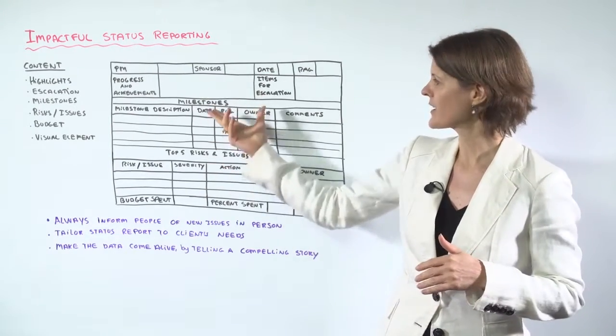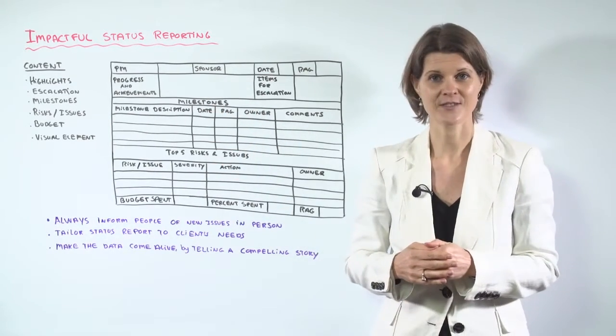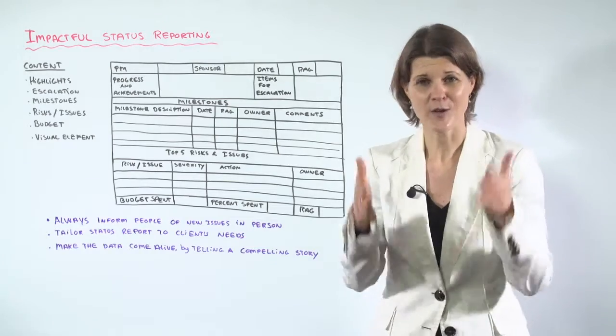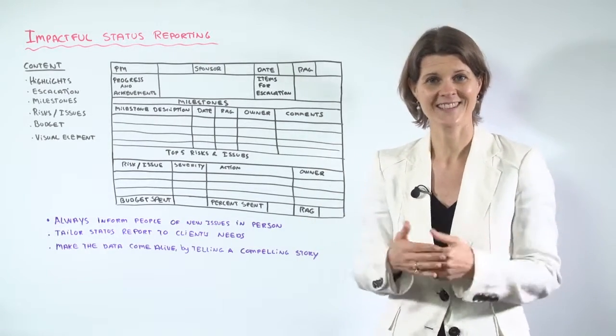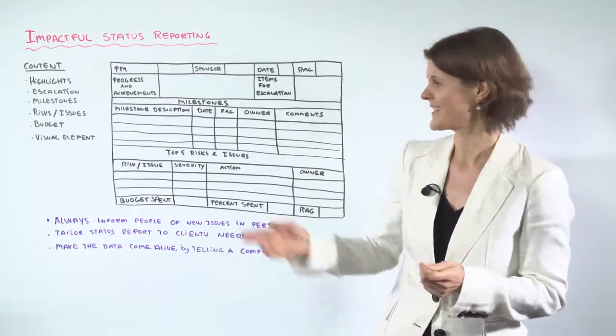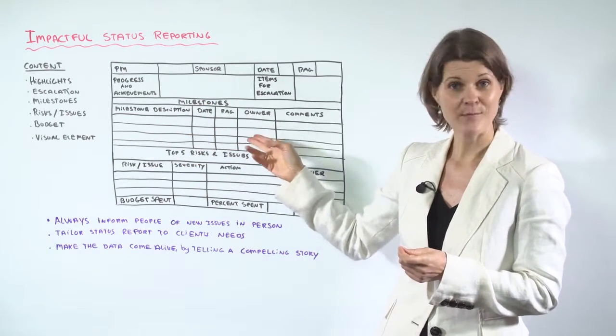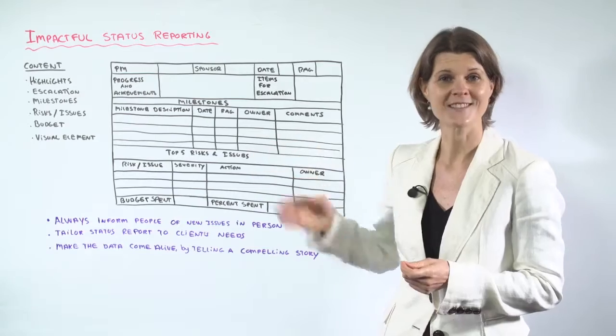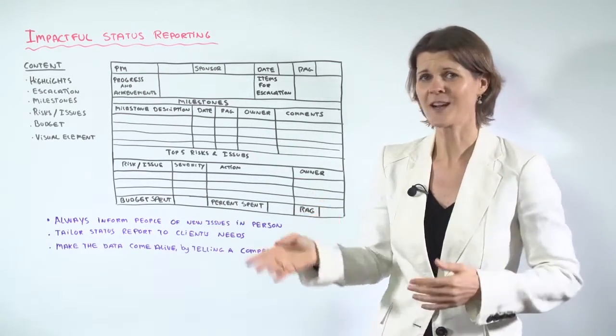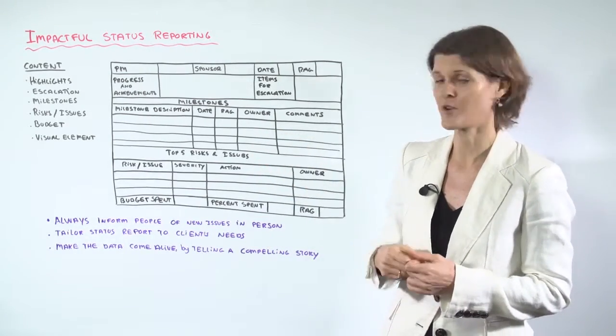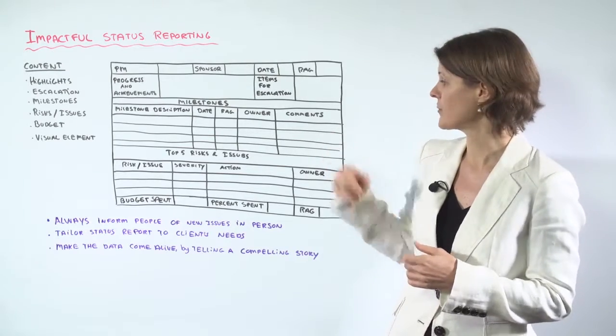The majority of the report here is allocated to milestones. Executives want to know if your project is on track. There is no better way of showing that than highlighting the milestones, the date, red amber green status and who the owner is. If a milestone is not on track, we want to know who to go to for an answer and then any comments you may have.